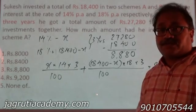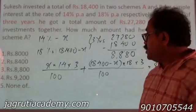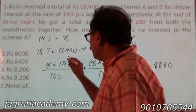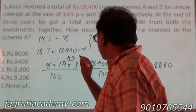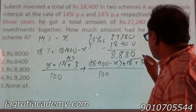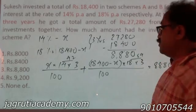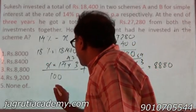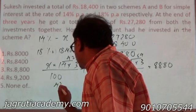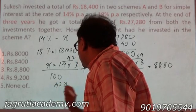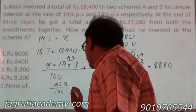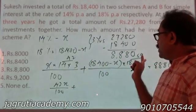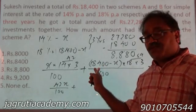We need to find X. Writing the equation: X × 14 × 3 / 100 plus (18,400 − X) × 18 × 3 / 100 = 8,880. This simplifies to 42X/100 plus 54(18,400 − X)/100 = 8,880. Note that 14 × 3 = 42 and 18 × 3 = 54.